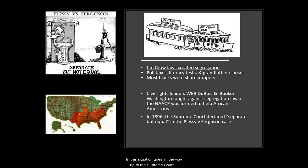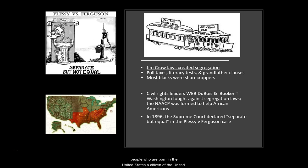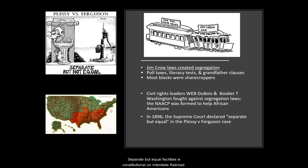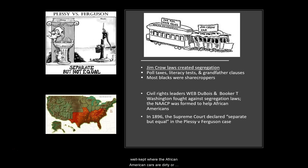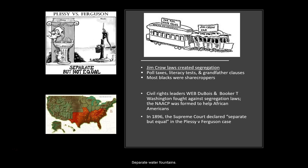This situation went through multiple lower courts and all the way up to the Supreme Court. A judge claimed the law violated the Equal Protection Clause of the 14th Amendment, but the case went to the Supreme Court in 1896. Their verdict was that separate but equal facilities are constitutional on interstate railroads. The problem is that these facilities were never truly equal — white cars were always cleaner and better maintained, while African American cars were dirty and falling apart. This set a precedent for segregation throughout every aspect of life: separate water fountains, restrooms, schools, restaurants, movie theaters — separate everything.